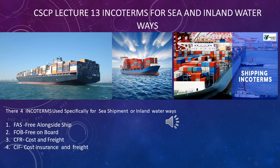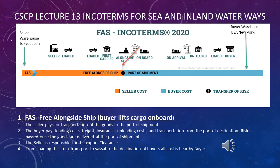Whenever we make international transactions like import and export through the sea or inland waterways, there are four terms used in quotes and recognized all over the world that you need to be familiar with. Number one is FAS — Free Alongside Ship. Number two is FOB — Free On Board. Number three is CFR — Cost and Freight. Number four is CIF — Cost, Insurance and Freight.